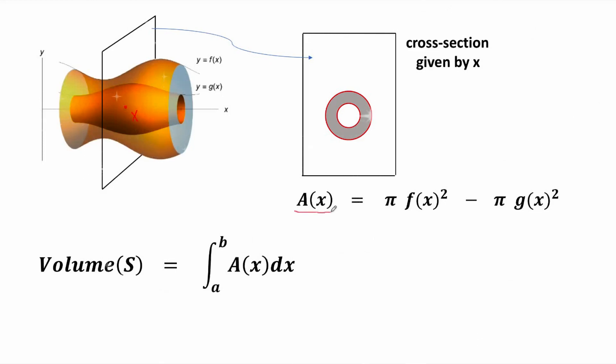Let A of x be the area of this disk. So A of x is the area of the big circle, which is pi times f of x squared, minus the area of the smaller circle, which is pi times g of x squared. Then, the volume of this solid s is the integral from a to b of A of x dx.